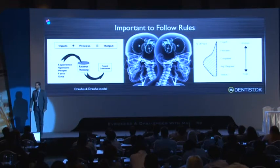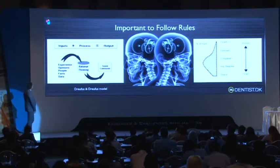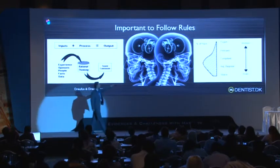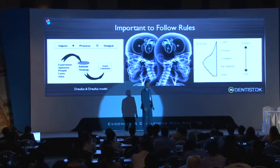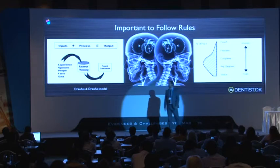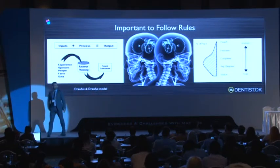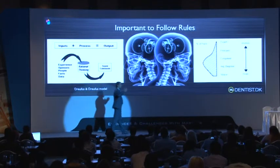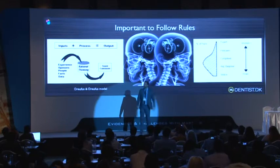So with experience, facts, and data, you can start to go from following the rules, from being a novice, to being a beginner, to being competent — and might even someday become an expert. If you look at this graph, this is the percentage of the population who are at different levels with different stuff in their life. And you see most people are in the competent-to-novice area. Very few people are experts.